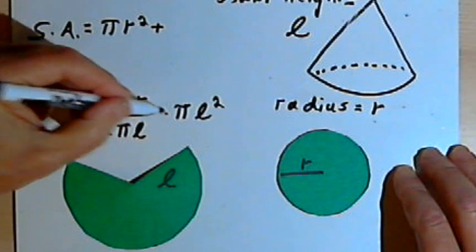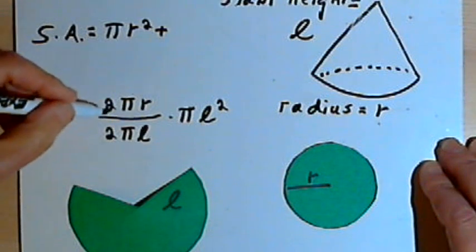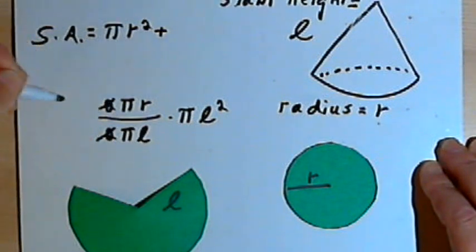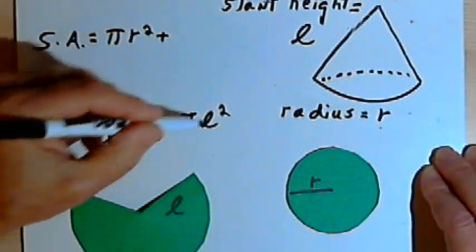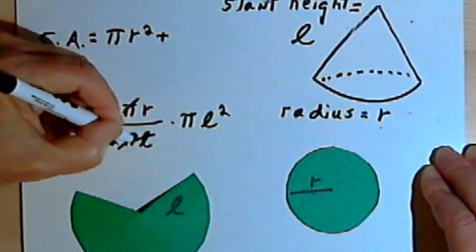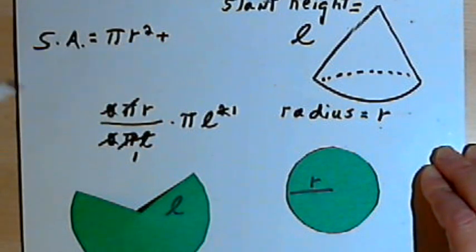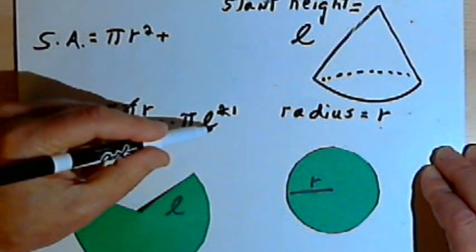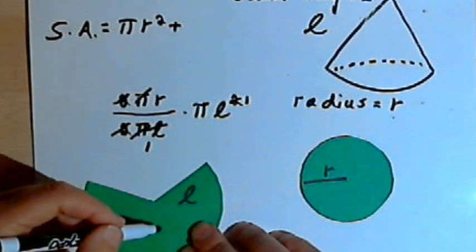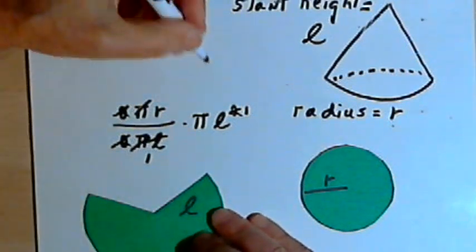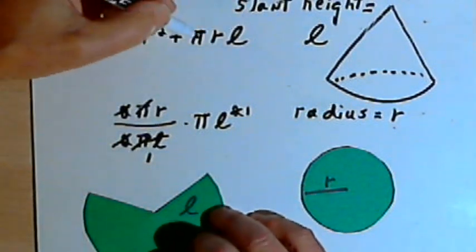Now I can simplify this multiplication problem quite a bit. I've got the fraction 2 pi r over 2 pi L. So obviously I can cancel out the 2s, I can cancel out the pi's, and I've got an L in the denominator and an L squared. So I can cancel out that L and take the L squared and just make it L to the first power. So now I've got R times pi L. That's going to give me the surface area for this sector, the other part of the cone. That's very often switched around into pi r L. It doesn't really matter what order you write them in.